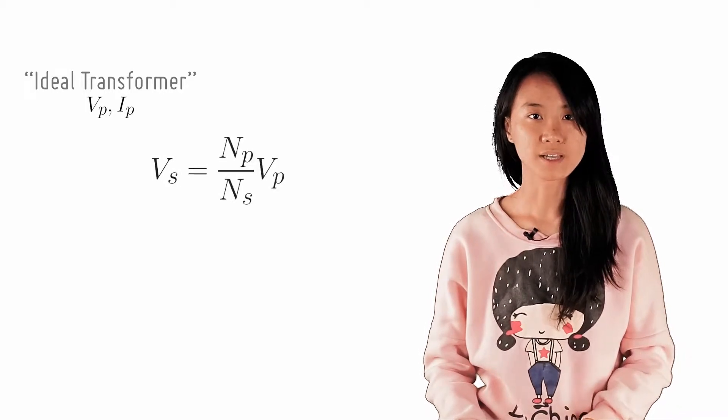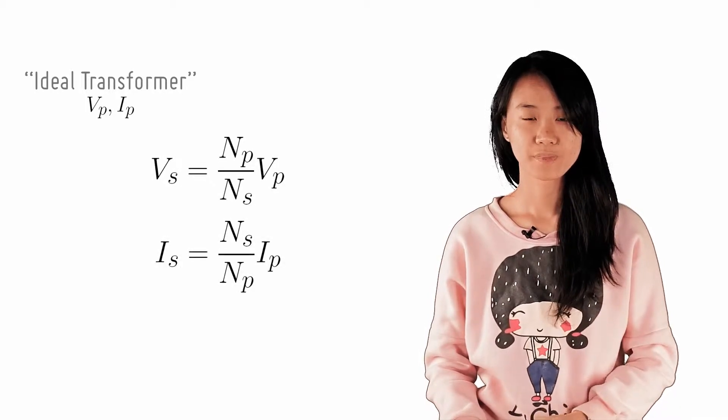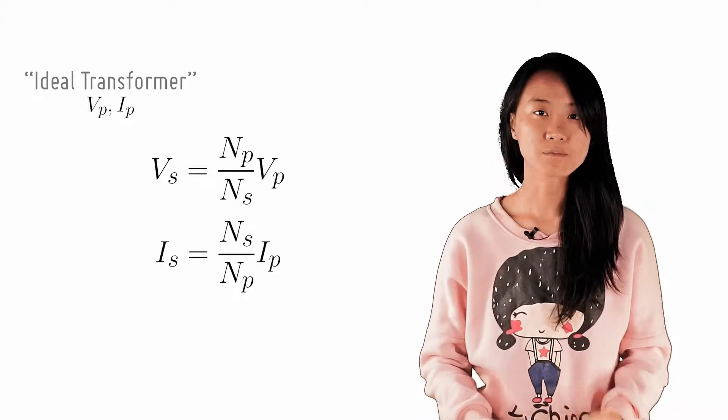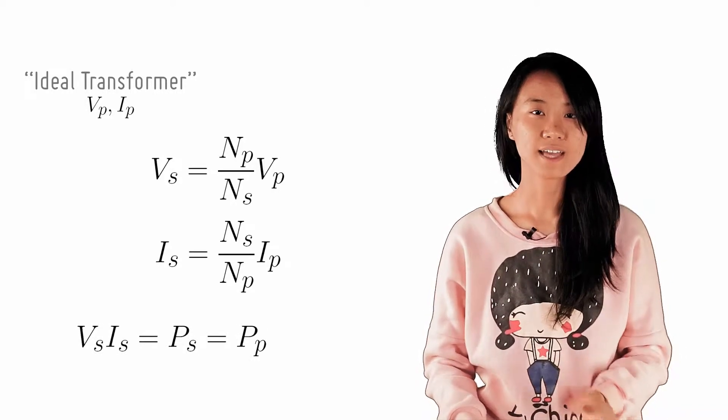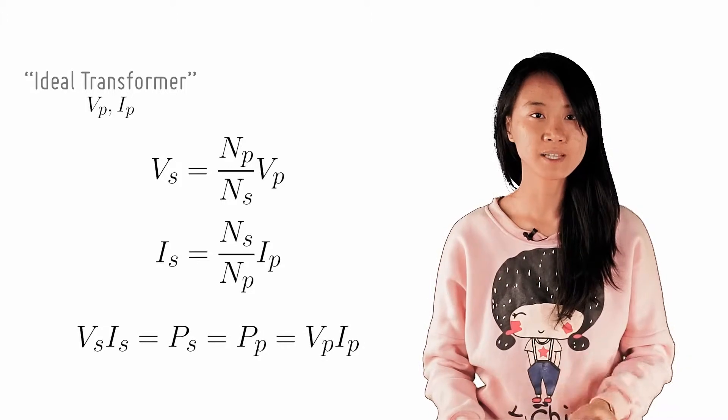we may write the output peak voltage and peak current as follows. We may easily check that the output power is equal to the input power by showing that vs times is equals vp times ip.